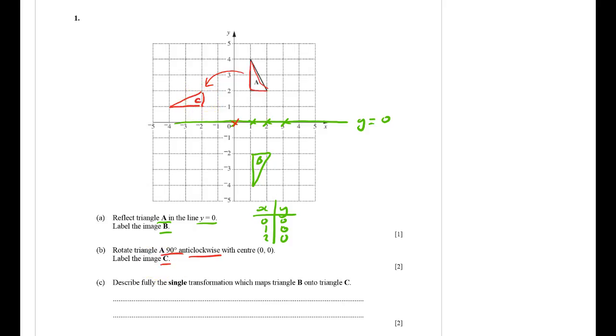And then finally it asked me to describe fully the single transformation which maps B onto C. And you see B and C hasn't just swung around. It's actually flipped over. So therefore it's going to be a reflection. As soon as I know what it is, write it down.